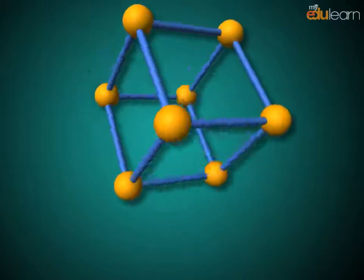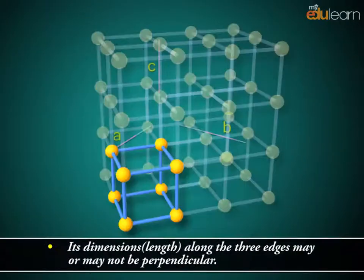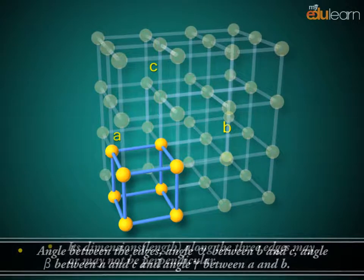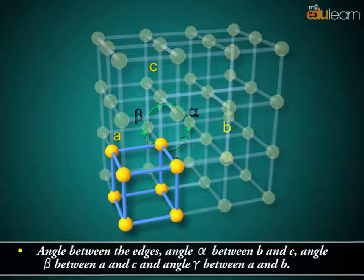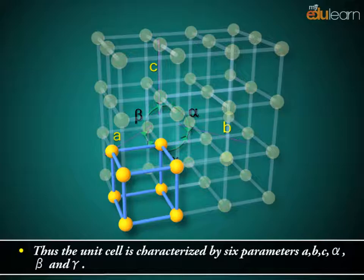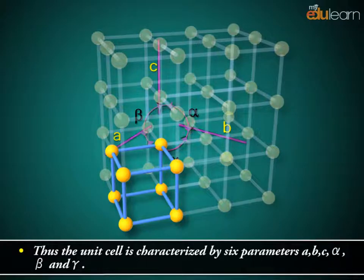Parameters of a unit cell: its dimensions — the length along the three edges — may or may not be perpendicular. The angles between the edges are: angle alpha between B and C, angle beta between A and C, and angle gamma between A and B. Thus, the unit cell is characterized by six parameters: A, B, C, alpha, beta, and gamma.